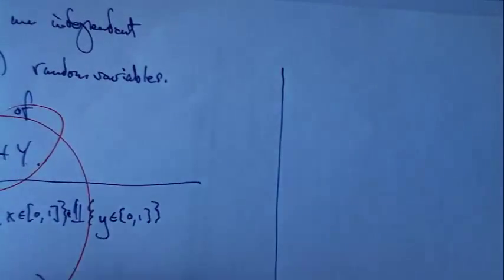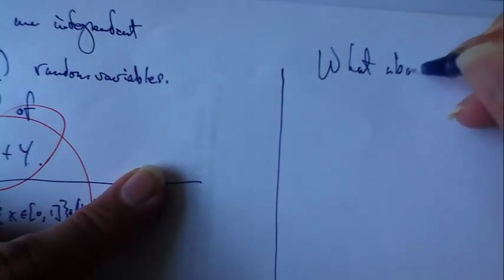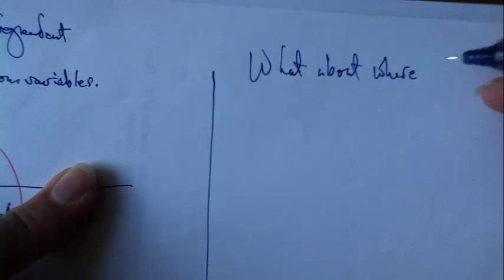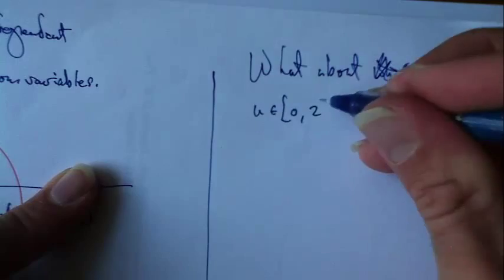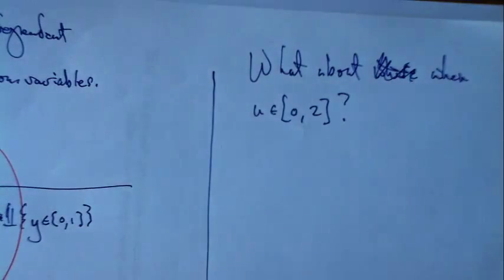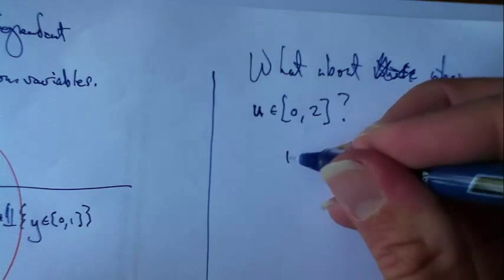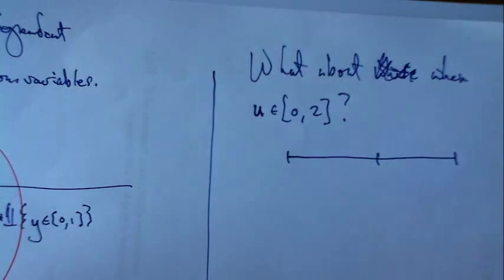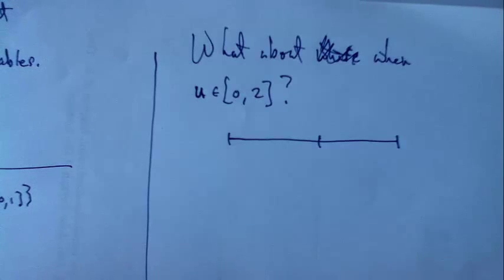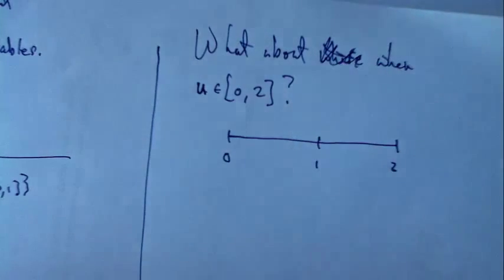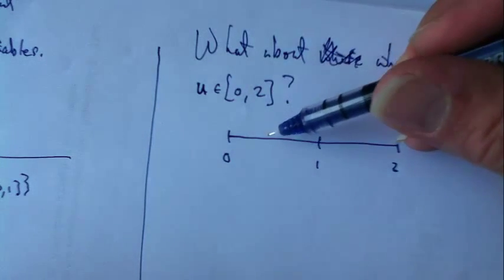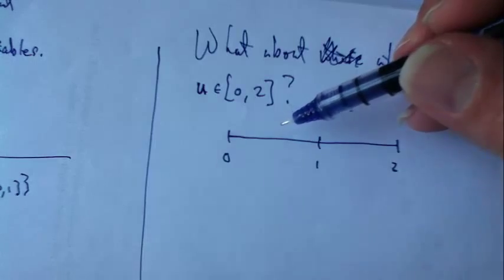So what about when u is between 0 and 2? If you think about it very carefully, this can get kind of tricky. You have to cover all cases exclusively. You don't want to double count anything. Here's 1, here's 2, here's 0. u is comprised of x and y.